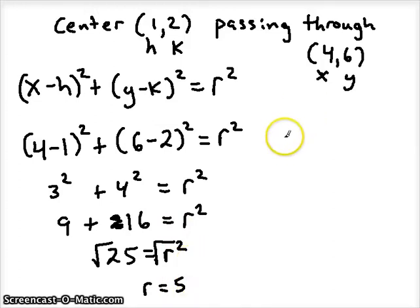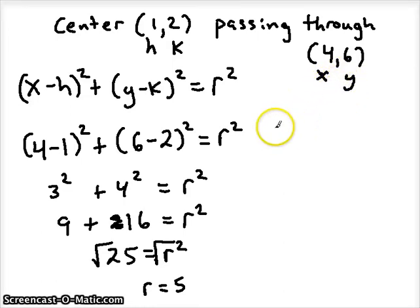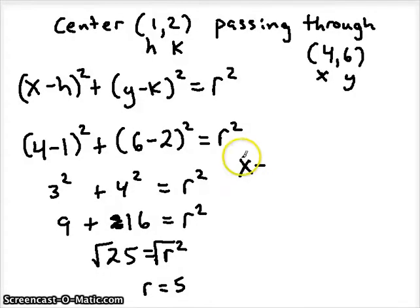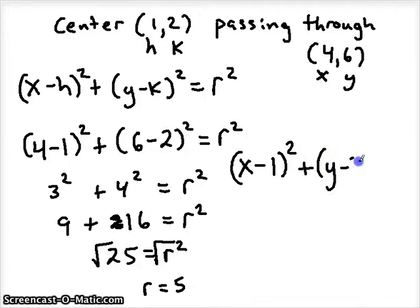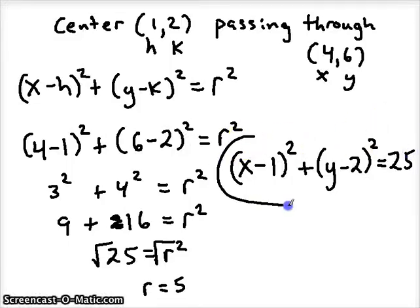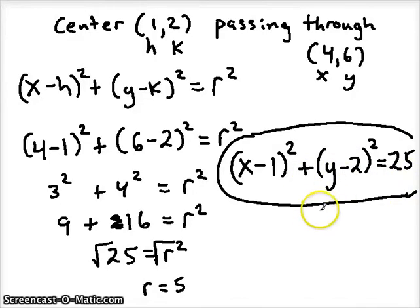If the question was asking you to state the equation of the circle given any point, you would keep X and Y as variables because you want them to stand for any point on the circle. You would use your center coordinates and radius value to write the equation in standard form. So we'd write X minus H, which is 1, squared, plus Y minus 2, squared, equals R squared. R squared was 25, and there is the equation of the circle — plugging in X and Y gives any point on it.